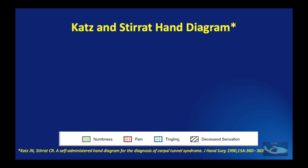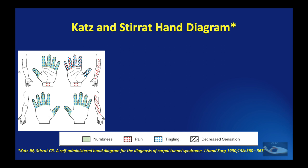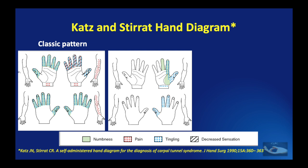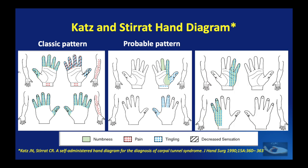In some situations these symptoms are enough to arrive at a probable diagnosis, as in the case of carpal tunnel syndrome using the CATS and STERAT hand diagram. The patient is asked to chart out the areas on the hand where numbness, pain, tingling, and diminished sensation are present. An appearance involving two of the first three fingers — thumb, index, and middle — gives a classic pattern pointing to carpal tunnel syndrome. If only the ulnar side is involved and not the lateral three fingers, it is most probably not carpal tunnel syndrome.